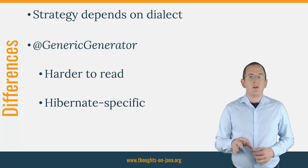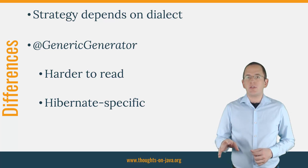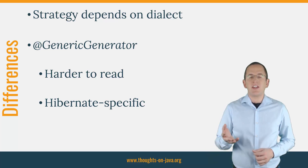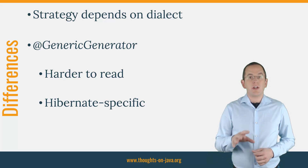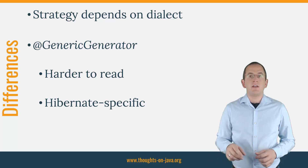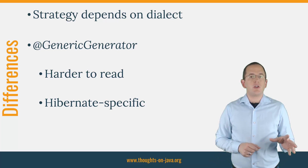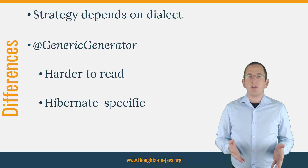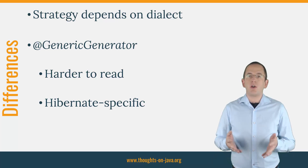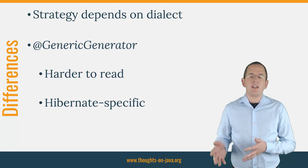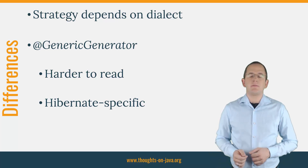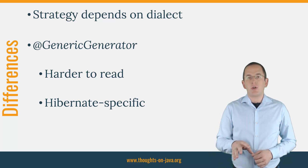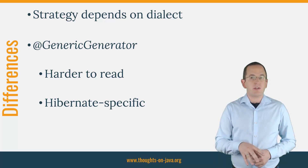The behavior of the native strategy changes if your database dialect returns a different strategy as the natively supported one. That could happen because you now use a different database dialect, or the internal implementation of the dialect changed. The generic generator mapping is much harder to read because it depends on the implementation of your database dialect.